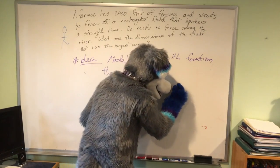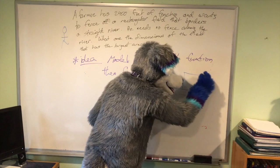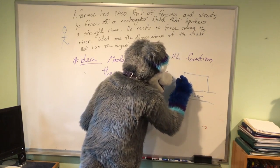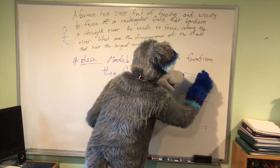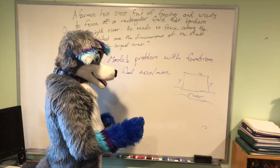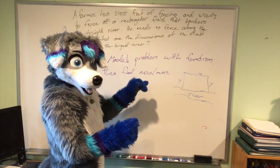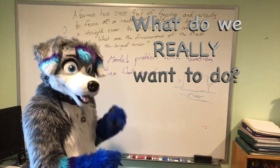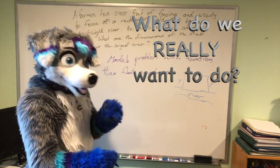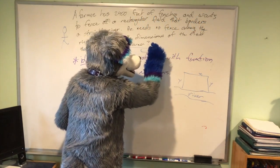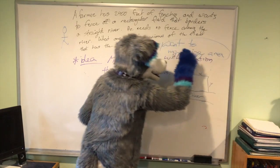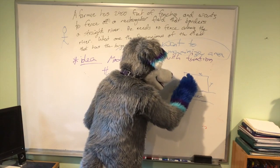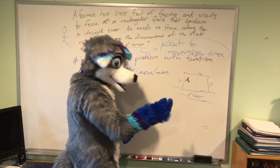Here's our picture. There's a river. So we want to maximize the area — that's what we want to do. When I read through this, I want to think: what do I really want to do? What we really want to do is find the largest area. We want to maximize the area. The area is x times y.